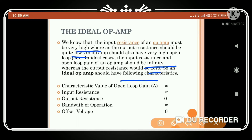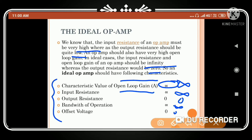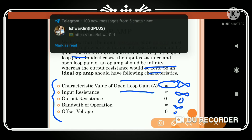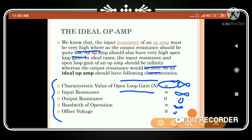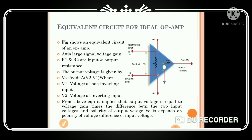The characteristics of an ideal op-amp are: open-loop gain = infinity, input resistance = infinity, output resistance = zero, bandwidth = infinity, and offset voltage = zero. These values are important for one-mark exam questions.